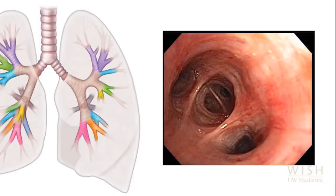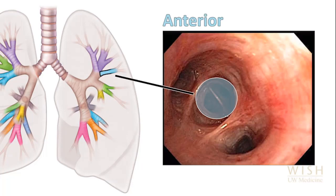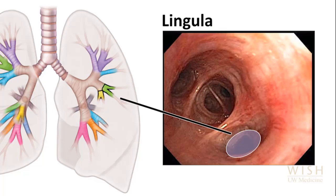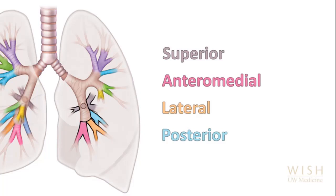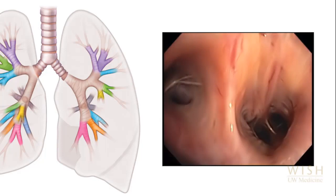Now for a quick anatomy reminder. The left lung has two lobes. The upper lobe divides into anterior, apico-posterior and lingular. The lingula has inferior and superior segments. The left lower lobe divides into the superior, anteromedial, lateral and posterior segments. The first segment we encounter during bronchoscopy is the superior segment. Beyond the superior segment, the anteromedial, lateral and posterior segmental airways divide.